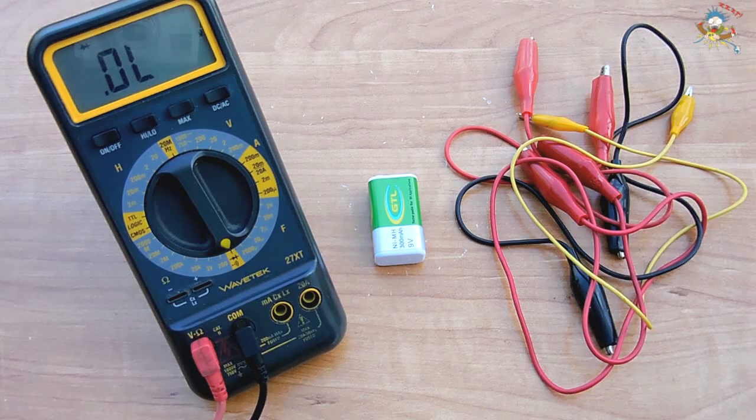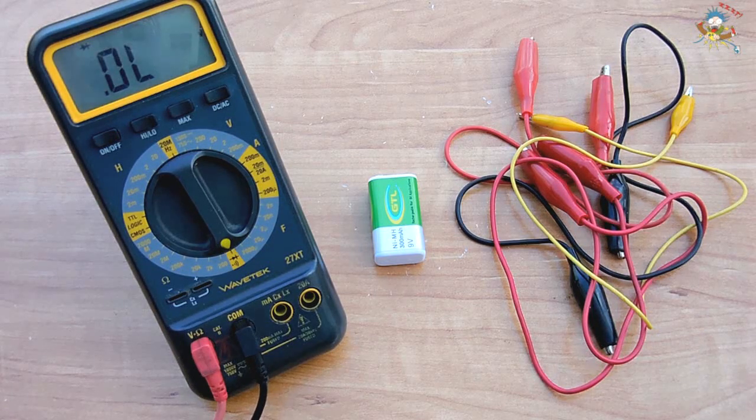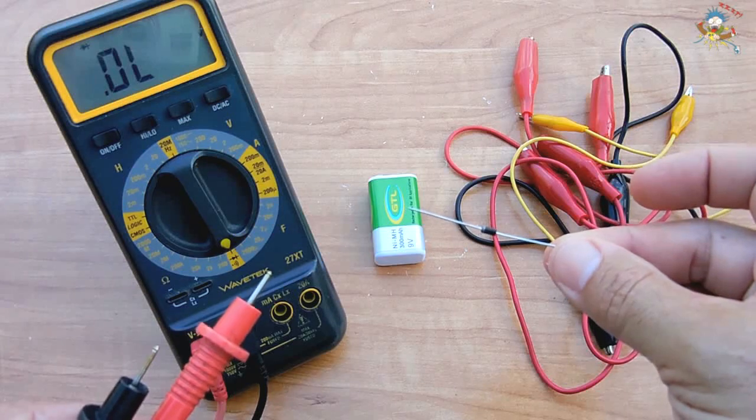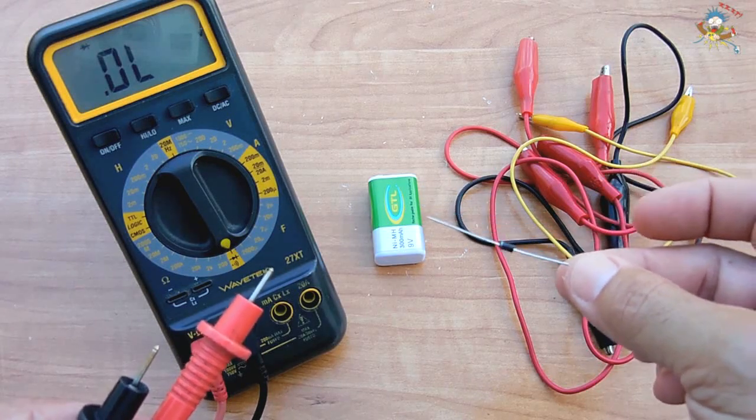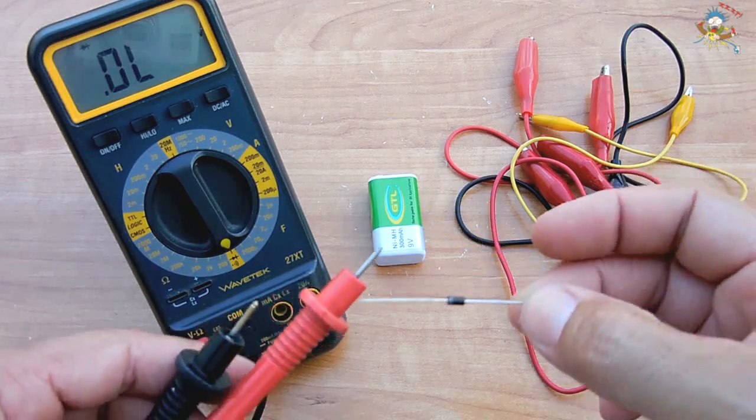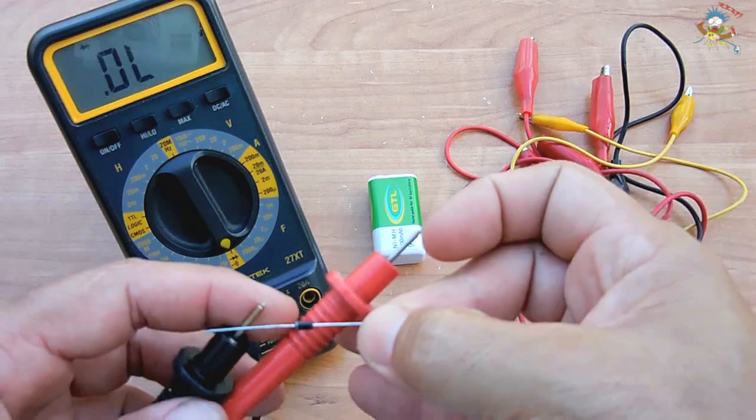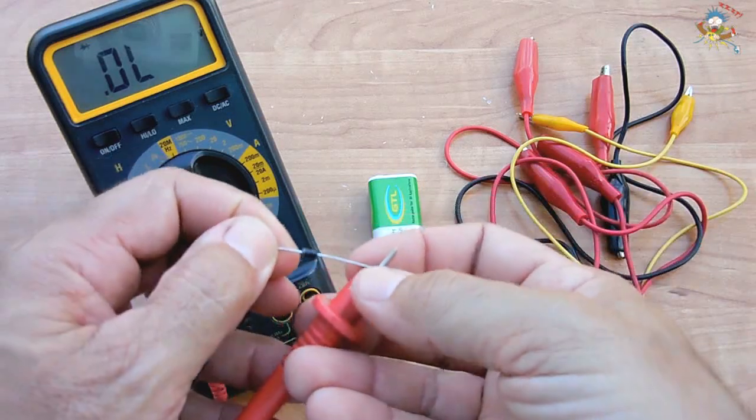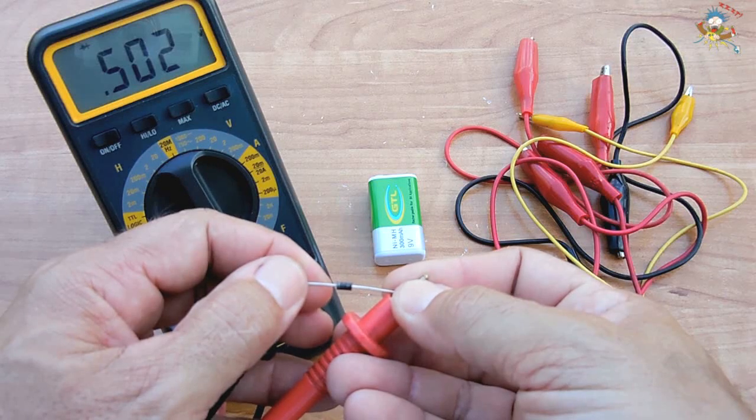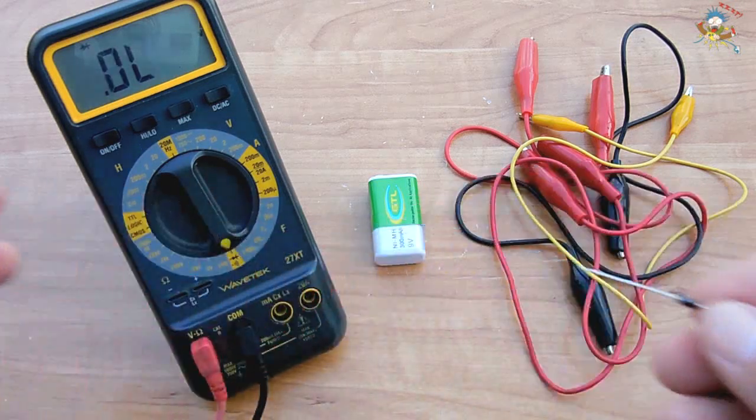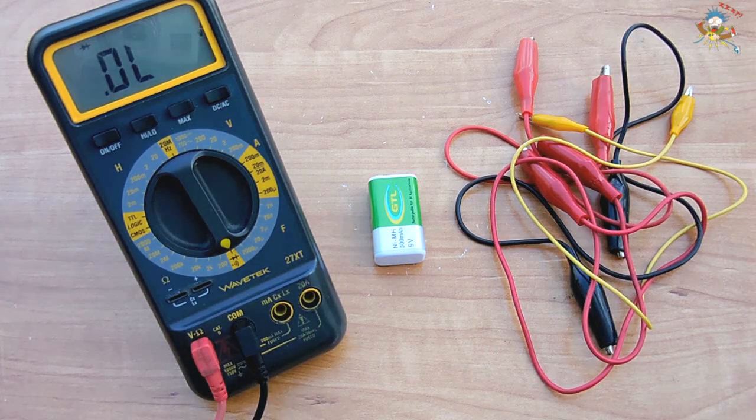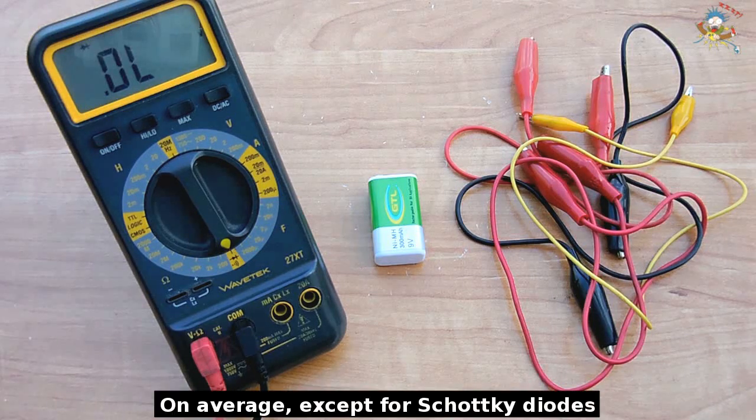Here we have a typical diode, this is a UF4007, an ultra fast diode. Let me connect it up. You can see the forward voltage is around half a volt. That reading will vary between 0.45 and 0.66.